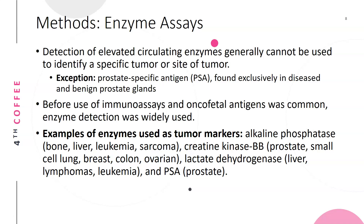Enzyme assays represent an older method of tumor marker detection. Elevated circulating enzymes generally cannot identify a specific tumor or specific site, with the exception of prostate-specific antigen (PSA), which is found exclusively in diseased and benign prostate glands. Before immunoassays and oncofetal antigens, enzyme detection was widely used. Examples include alkaline phosphatase for bone, liver, leukemia, and sarcoma; creatine kinase BB for prostate, small cell lung, breast, colon, and ovarian cancer; lactate dehydrogenase for liver, lymphomas, and leukemias; and PSA for prostate. Enzyme assays are no longer widely used for this purpose.